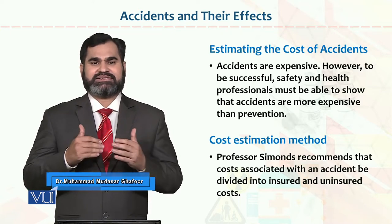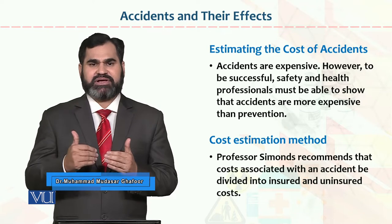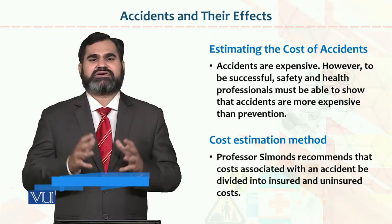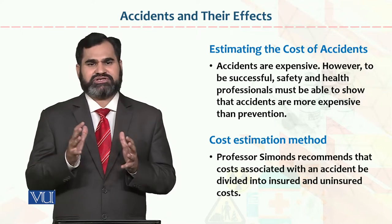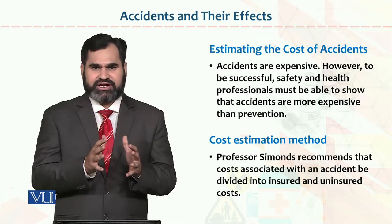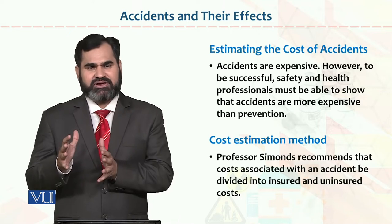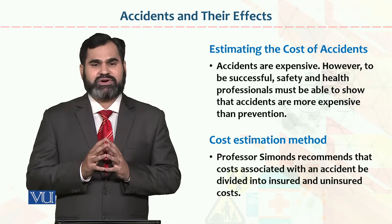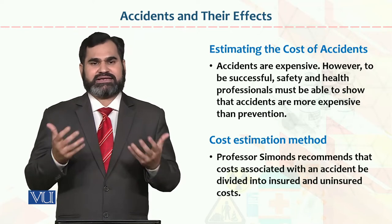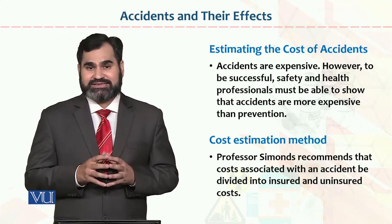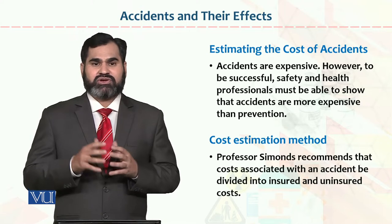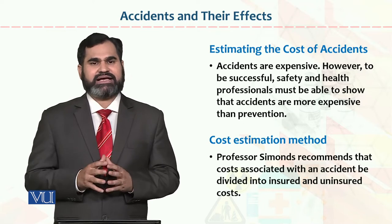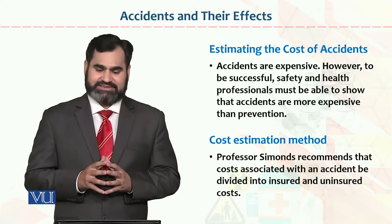When accidents happen, what happens to preventive measures? When you develop preventive measures, the cost is much incurred — in terms of time, resources, finance, life, and death. The accident probability exists, and the protective mechanism must be developed first. This is the cost of accidents — we call it estimating the cost of accidents.